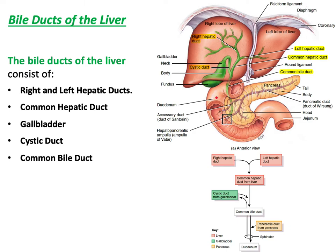What are the bile ducts? Starting from the liver, bile synthesized in the right lobe is transferred through the right hepatic duct, and bile from the left lobe is transferred through the left hepatic duct. At the hilum, the right hepatic duct and left hepatic duct unite to form the common hepatic duct.